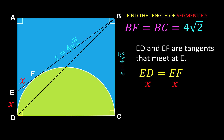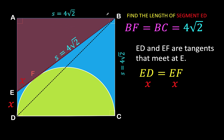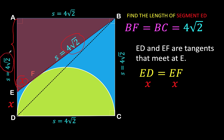Focusing on this right triangle: leg AB is 4√2, and the hypotenuse EB is the sum of X and 4√2. Since all sides of the square are equal, AD is also 4√2. But AD is composed of two segments, AE and ED, so the length of leg AE is 4√2 minus X. We now know the two legs and the hypotenuse, so we can apply the Pythagorean formula to find X.